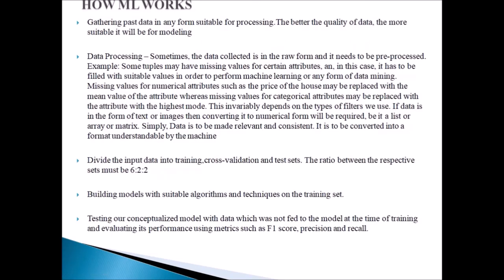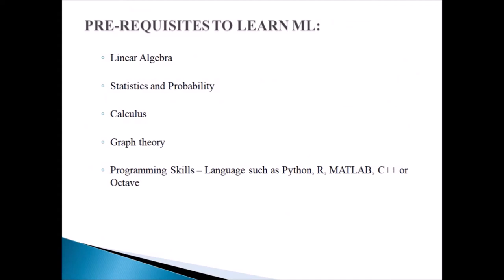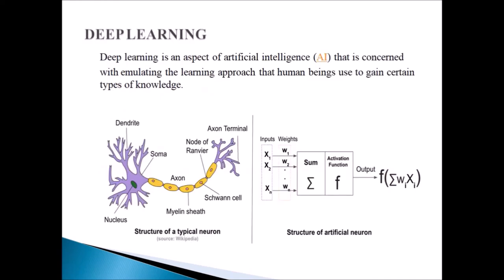How does machine learning or deep learning work? First, you gather your data — for example, plenty of dog or cat images. Then you process this data — find missing values, arrange them. Then you divide the inputs into training, validation, and test sets. After dividing your data, you build your model, test your model, and make predictions. Prerequisites for learning machine learning: linear algebra, statistics and probability, calculus, graph theory, and programming skills — Python is the most used language, but you can also use R, MATLAB, C++, or Octave.